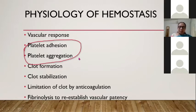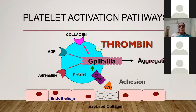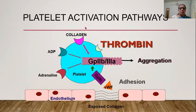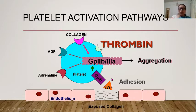Platelet activation pathways involve exposed collagen attracting von Willebrand factor, which through glycoprotein 1b causes platelet adhesion to the endothelial lining. This activates glycoprotein 2b3a, and in the presence of ADP, collagen, adrenaline, and thrombin, aggregation occurs, forming a platelet plug that enhances the coagulation pathway.